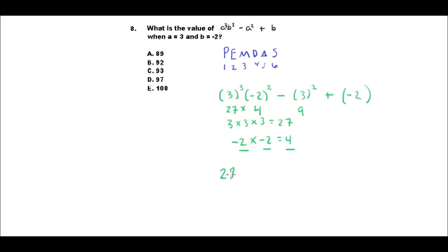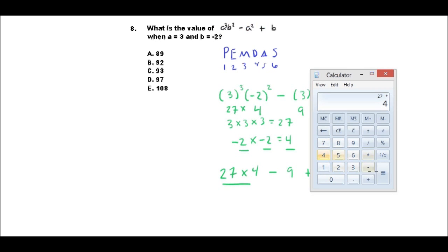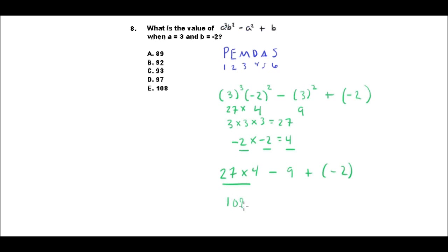I've got 27 times 4 minus 9 plus (-2). I've got to apply PEMDAS, I don't have any exponents left, so now I turn to multiplication and division. I see I've got some multiplication here, so I've got to do that first. 27 times 4 is 108, so that's 108 minus 9 plus (-2). 108 minus 9 is 99, so that's 99 plus (-2), and that's the same thing as 99 minus 2, which equals 97, and that is answer choice D.